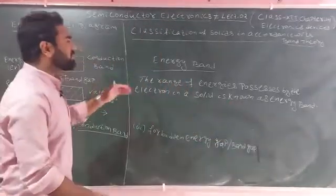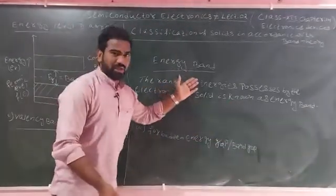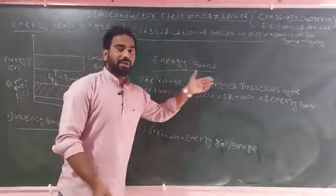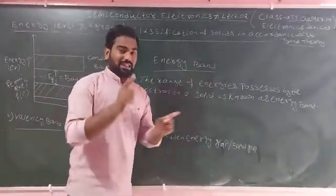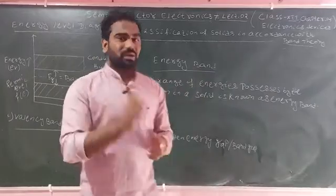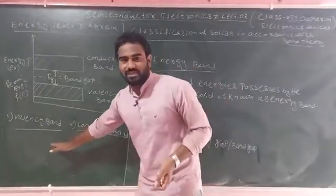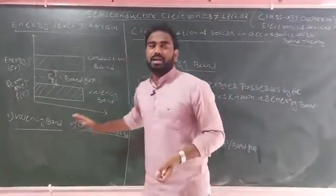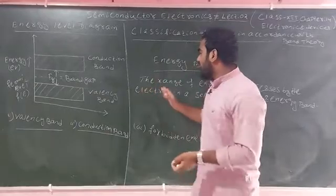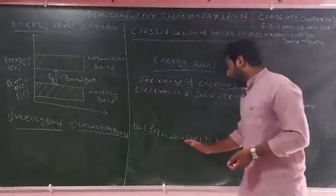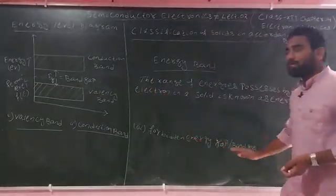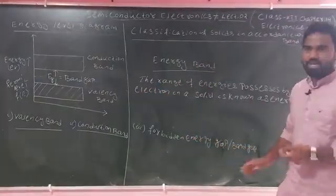Our classification of energy bands — the types of energy bands. There are three types of energy bands: one is the valence band, the second one is the conduction band, and the third one is the forbidden energy gap, also called the band gap.